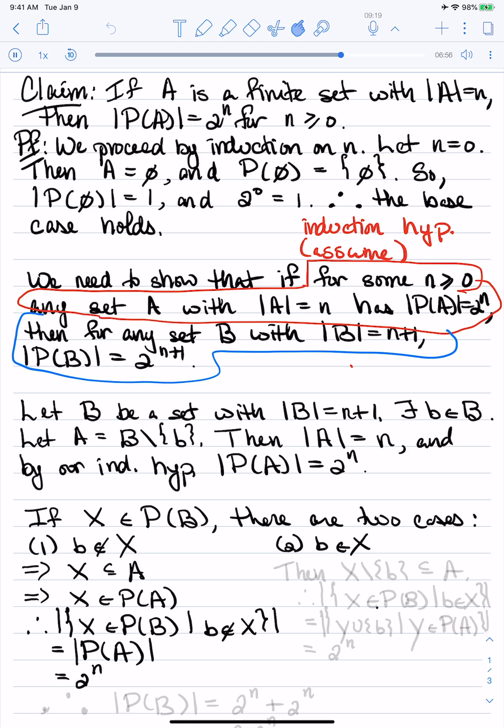And you know what? Maybe I'll write this a little differently. I think what I want to do instead is just say that if b is in x, then the set x take away b is a subset of A. Therefore, if I look at the set of all x in the power set of B such that b is in x, this is actually exactly the same as the set of all sets y union little b where y is an element of the power set of A. In other words, each subset of B that contains little b is obtained by adding b to a subset of A.